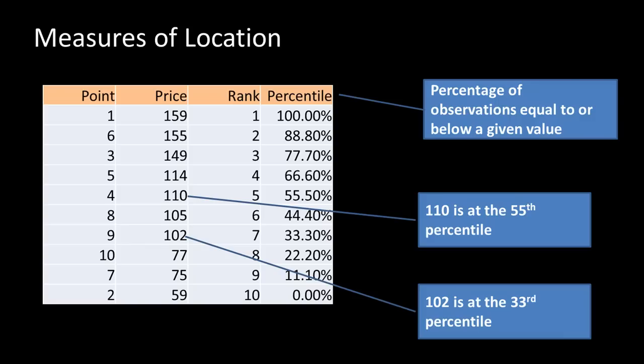We are all familiar with percentiles if we have taken competitive exams like SAT or GMAT. They say he scored a 98th percentile, which means 98 percent of the people obtained a score less than or equal to that particular score. Alternatively, only 2 percent of the people scored higher than you. If you scored at the 99th percentile, only 1 percent scored above you — 99 percent had scores either equal to or below you. Percentile gives a good idea of where a particular value stands in the entire distribution.